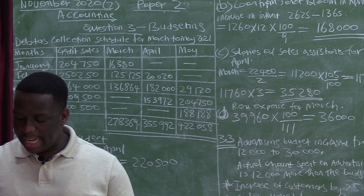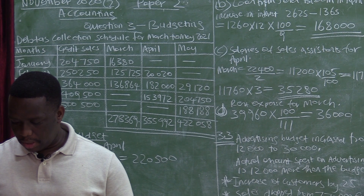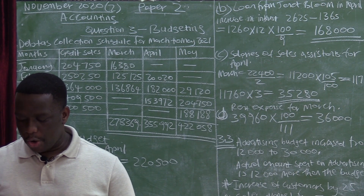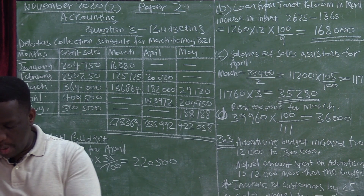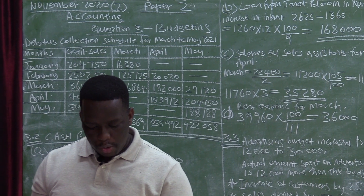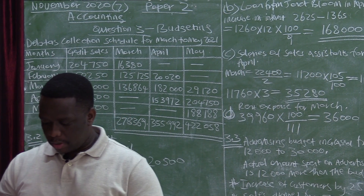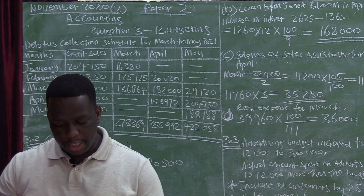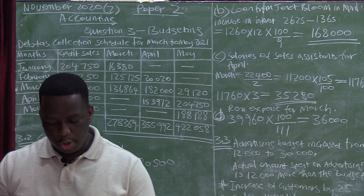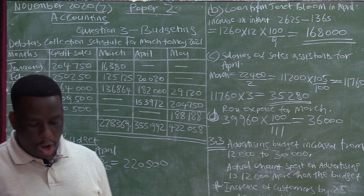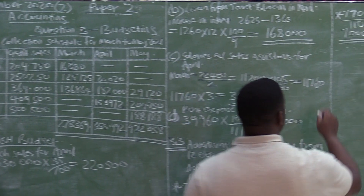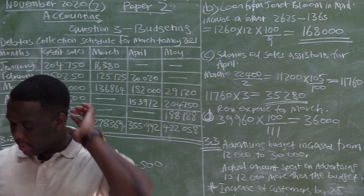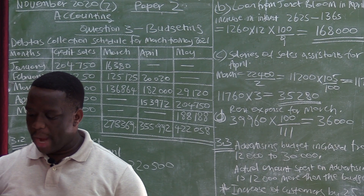Still on 3.3 — refer to information F for consumable stores. Comment on whether consumable stores have been well controlled or not, with figures or calculations. Our consumable stores are over the budget, but the question is whether consumable stores have been well controlled or not.